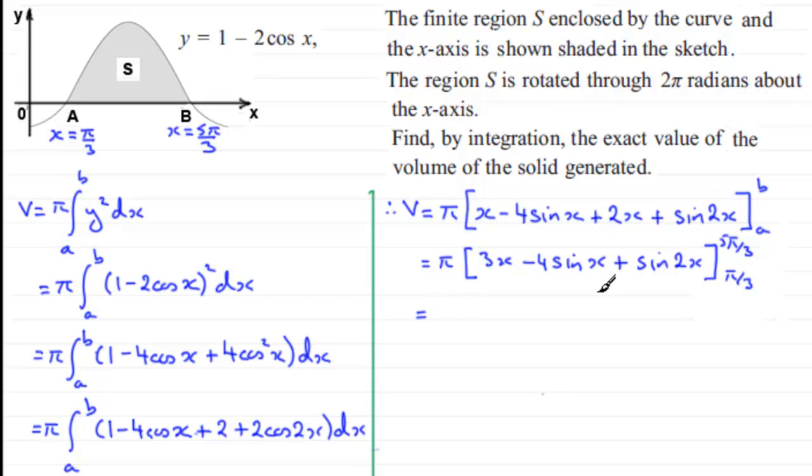Then all we've got to do is put our values through, starting with 5 pi upon 3. We've got pi on the outside, and if we put 5 pi upon 3 in for x, we've got 3 lots of 5 pi upon 3, which is 15 pi upon 3. Then we've got minus 4 sin of 5 pi upon 3, and here plus sin of 2 lots of 5 pi upon 3, so it's plus the sin of 10 pi upon 3.